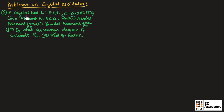A crystal oscillator has L equal to 0.4 Henry, C equal to 0.085 picofarad, and Cm equal to 1 picofarad with R equal to 5 kilo ohm. Here we need to find the series resonant frequency, the parallel resonant frequency, the percentage by which the parallel resonant frequency exceeds the series resonant frequency, and the Q factor.